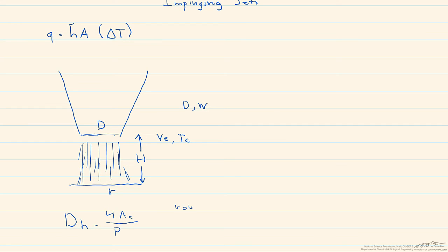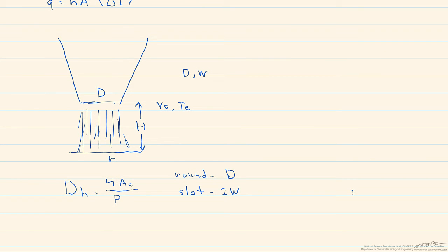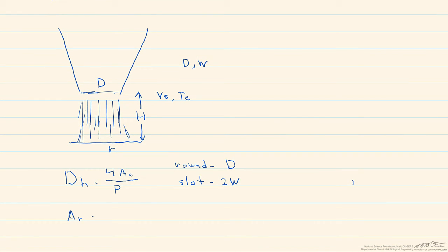For a round nozzle, the hydraulic diameter is the same as the diameter. However, if it's a slot nozzle, then our hydraulic diameter is two times W. This hydraulic diameter is used not only in calculating the Reynolds number, but also in calculating H from our Nusselt number correlation. A final important geometric parameter is the relative nozzle area, which is the cross-sectional area of the exit divided by the cross-sectional area of the cell being impinged upon.